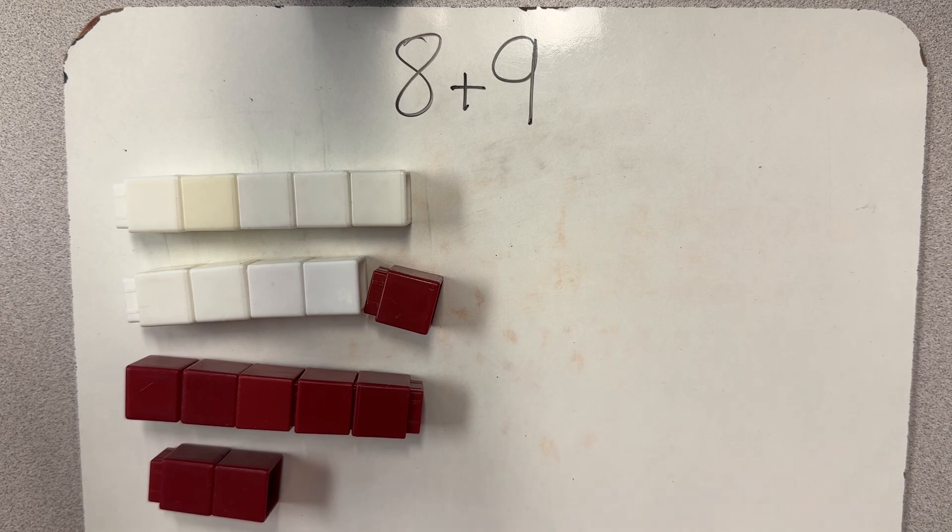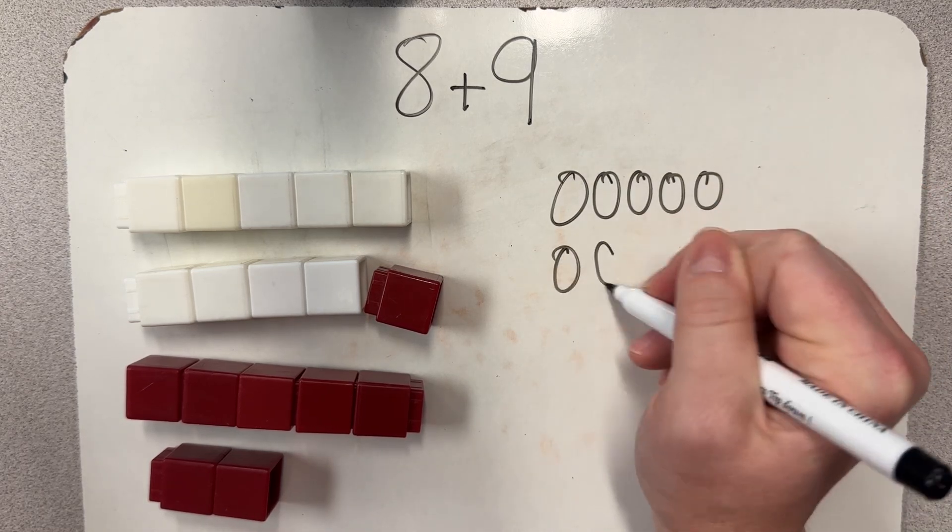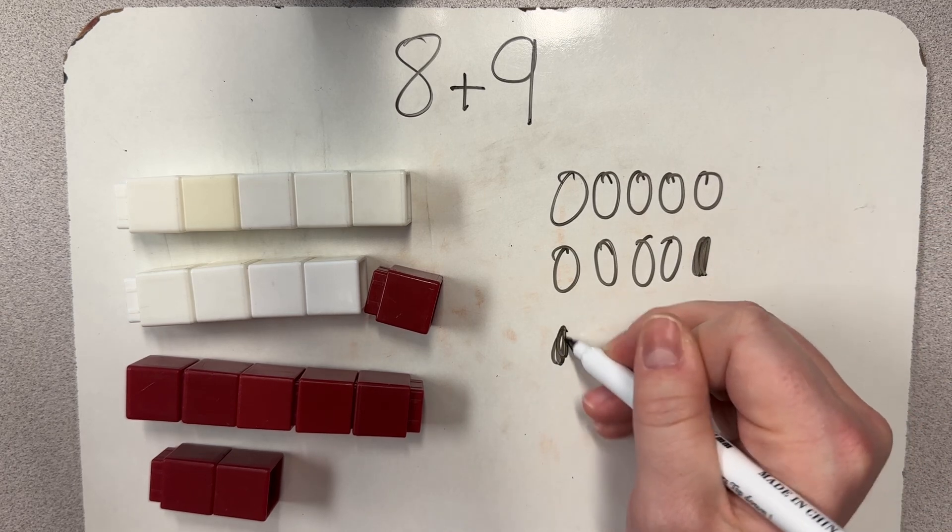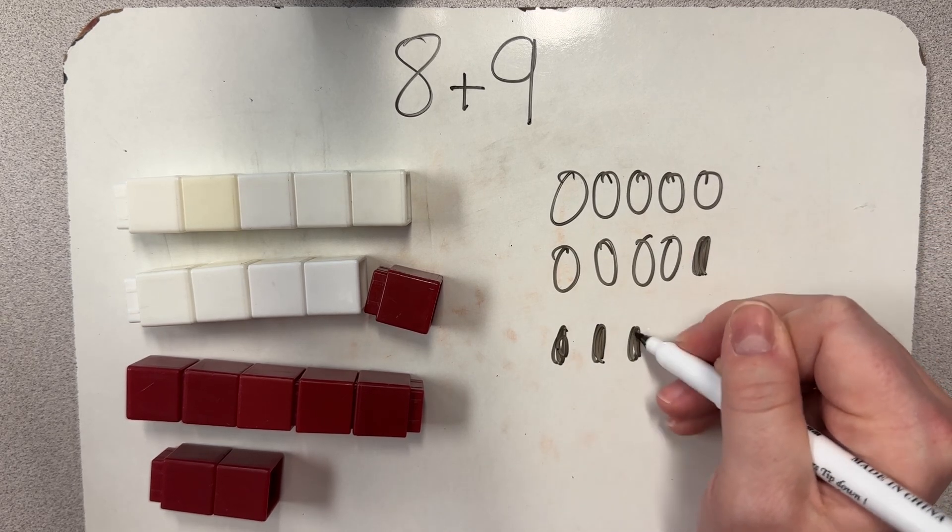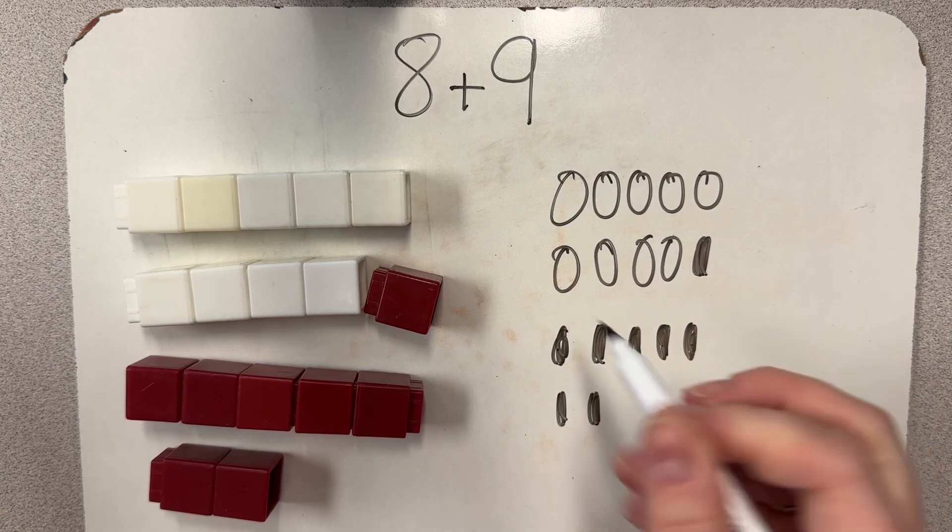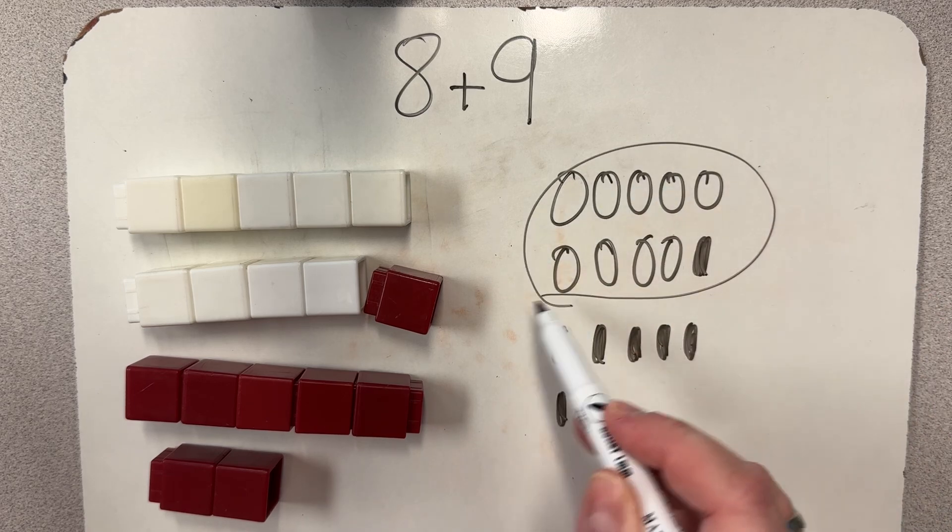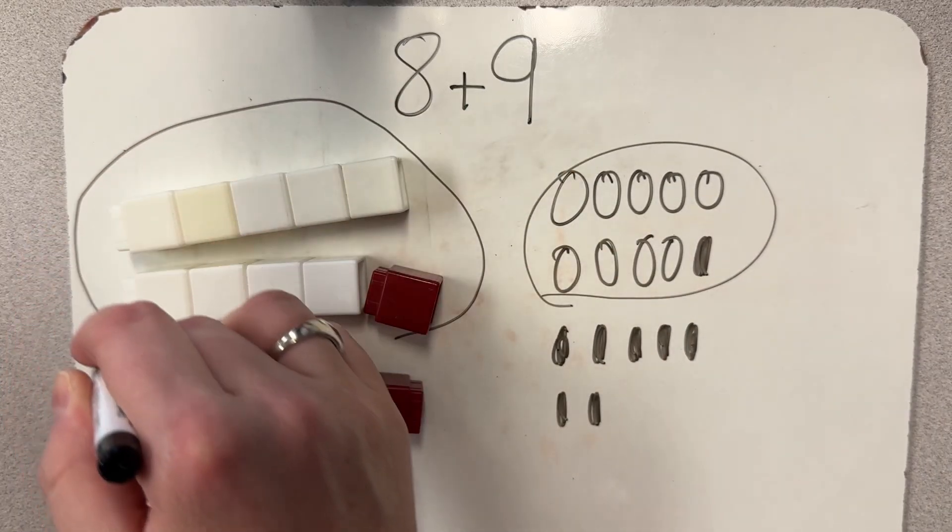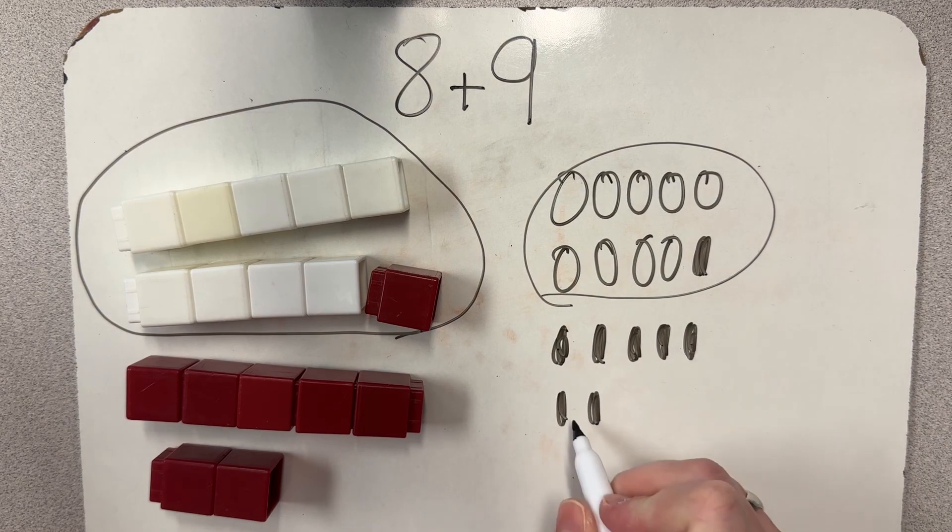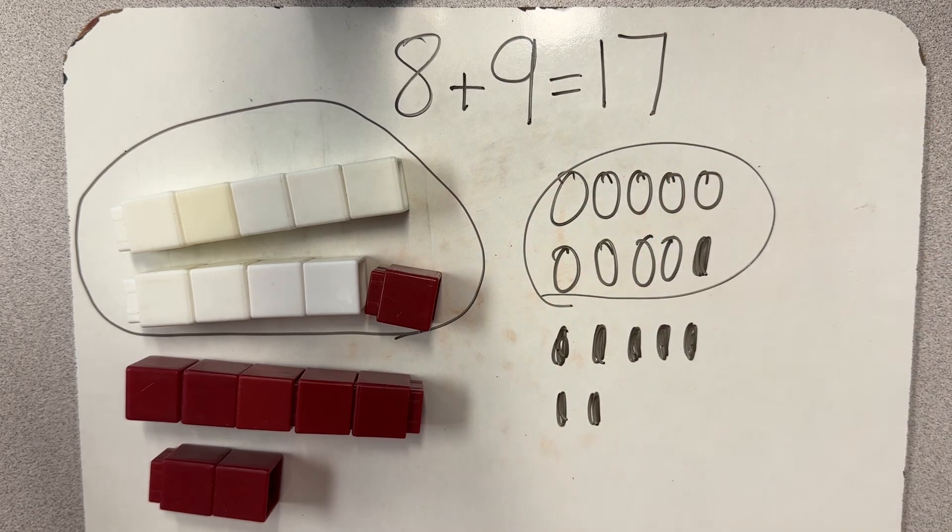To carry that over to a sketch, I would show 9 and then to represent 8, I would do closed dots. And even if I build or I sketch, I can circle that group of 10 to help me remember that I have 10 there. So now I can count 10 and 5 more is 15, 16, 17. So 8 plus 9 equals 17.